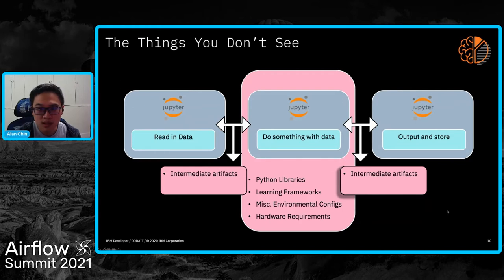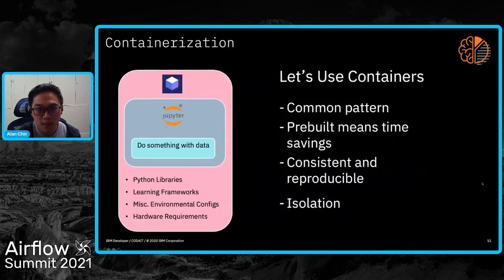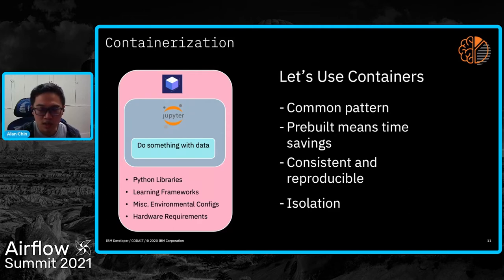We're also able to run these notebooks or nodes in parallel if the pipeline runtime supports it — in which case Airflow does. So you'll be able to parallelize your workflow as well by modularizing. After modularizing, some notebooks may have different requirements than others — libraries, learning frameworks, and miscellaneous environmental configurations — or a step could require more horsepower for heavier workloads, which comes in the form of hardware requirements. We want to use containers because they provide an excellent solution, encompassing all these extra requirements in a neat package.